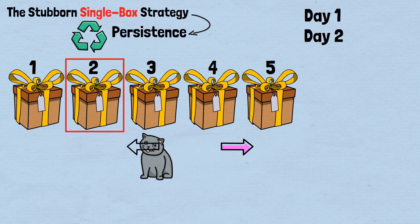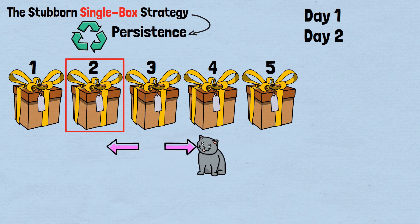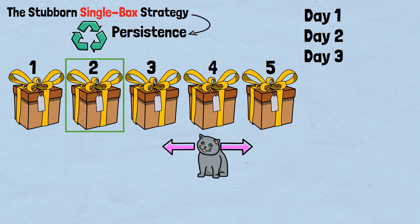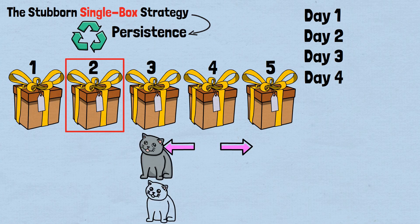Night 2, cat moves from box 3 to either box 2 or box 4. Let's say it goes to box 4. Day 3, you check box 2. Cat is in box 4. Miss. Night 3, cat moves from box 4 to either box 3 or box 5. It goes to box 3. Day 4, you check box 2. Cat is in box 3. Miss. The cat can establish a perpetual loop between boxes 3 and 4, never intersecting with your persistent box 2 searches. You could theoretically search forever and never find the cat.